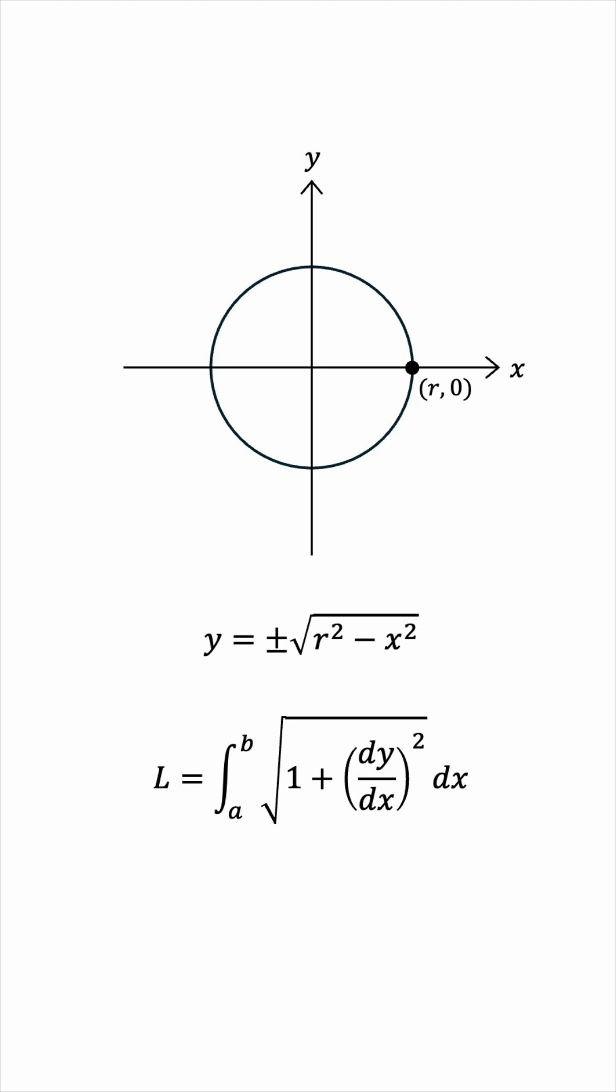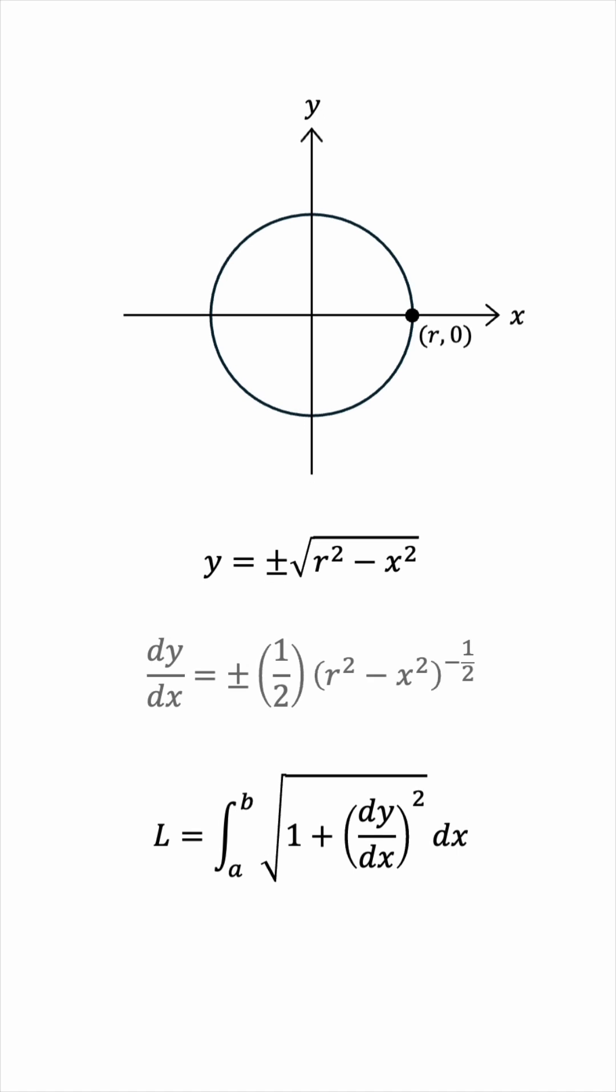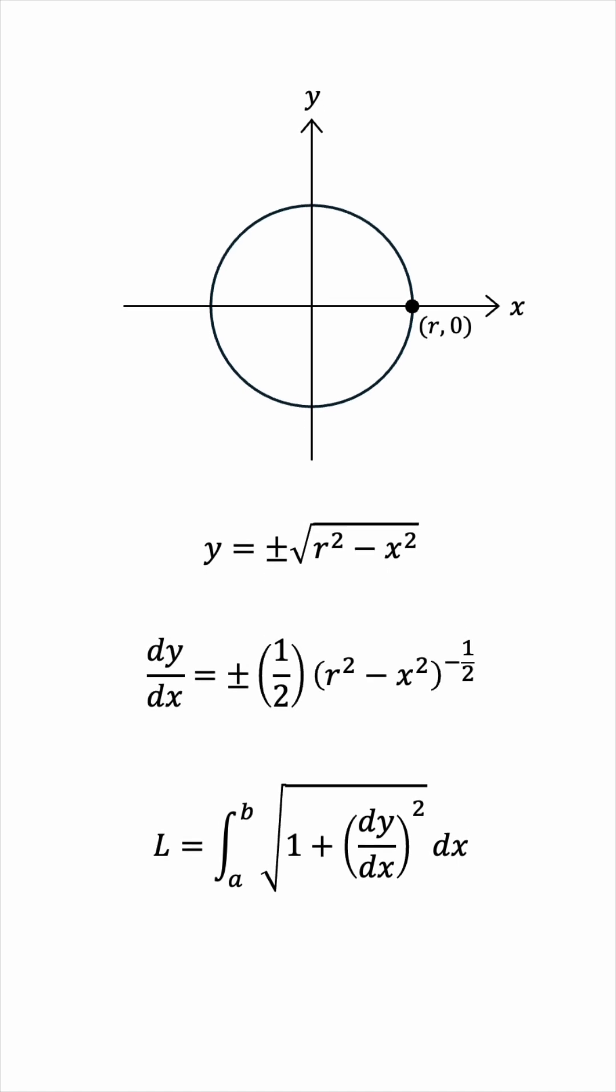We'll bring the power down, which is one-half, subtract the power by one, and let's not forget the chain rule, we'll multiply by negative 2x. The 2 and one-half cancel each other, and the negative sign can be brought to the front, perhaps making the plus or minus minus or plus, if you want to be too technical.